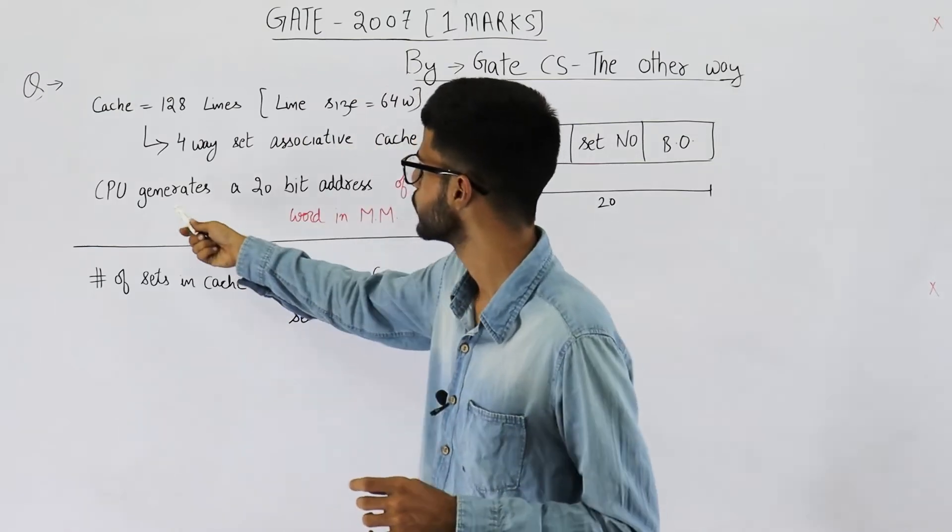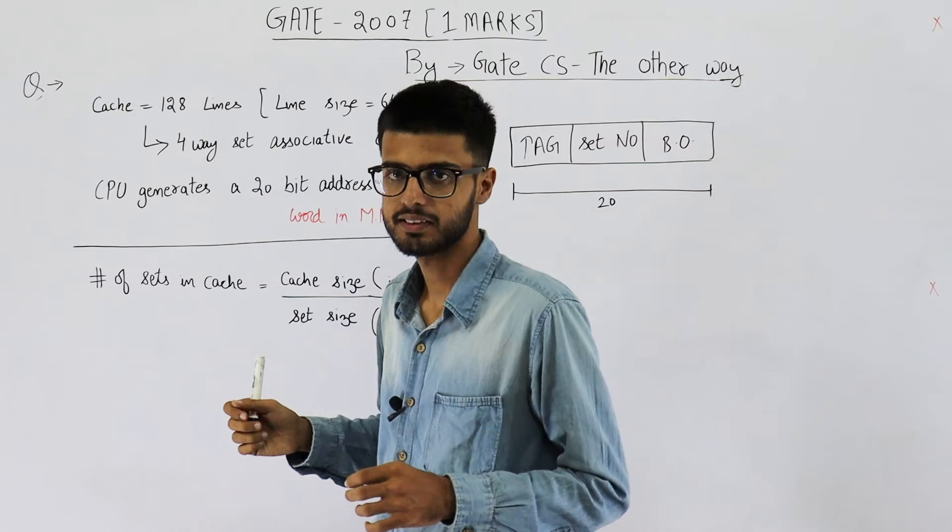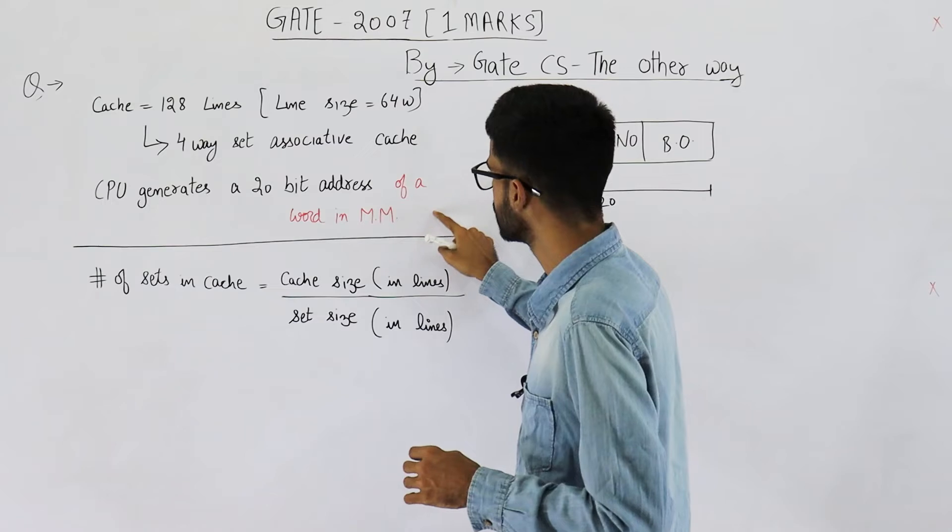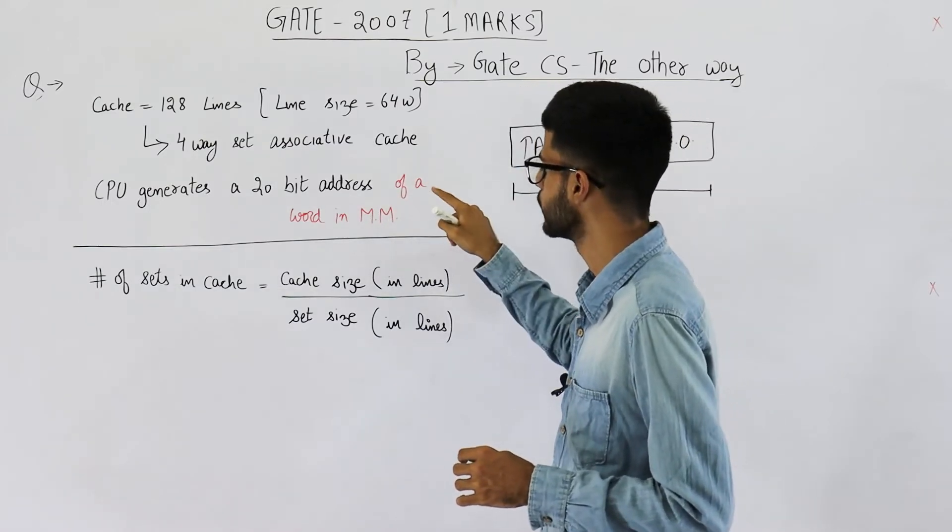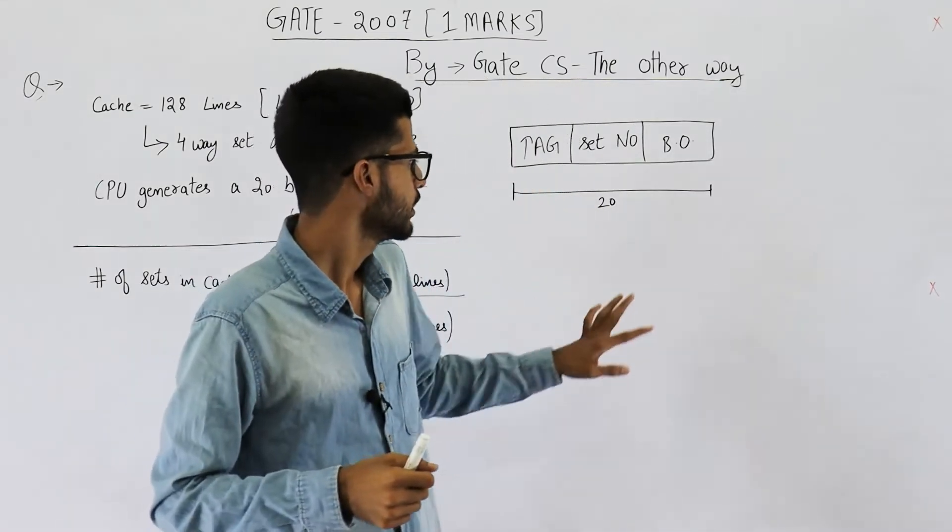I agree that CPU generates a virtual address. It's then converted to a physical address using the page tables. But they are talking about a physical address only, by specifying that it's an address of some word in main memory. It's clear.